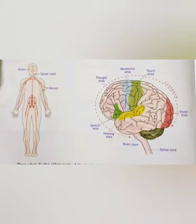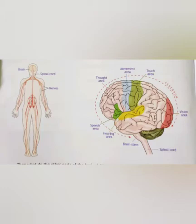Each part of the brain is responsible for some action. Look at this picture of the brain — one part is responsible for thought, another for movement, another for touch. The red area is responsible for vision, and another for hearing and speech. So each part of the brain is responsible for some action.